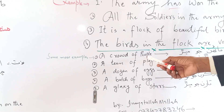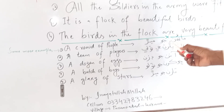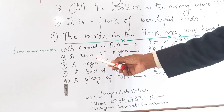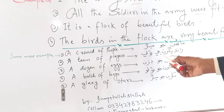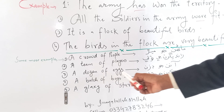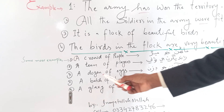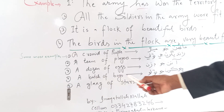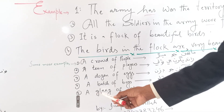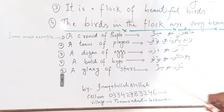Some common collective noun phrases: a crowd of people, a team of players, a dozen of eggs, a badge of boys, and a galaxy of stars.